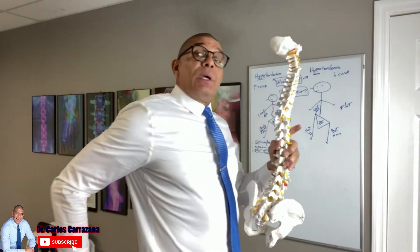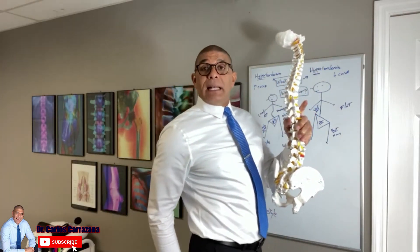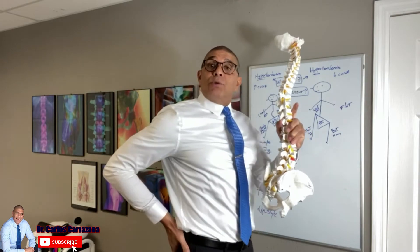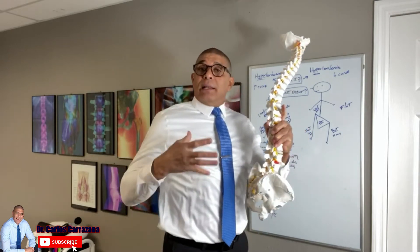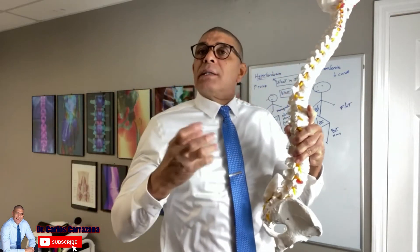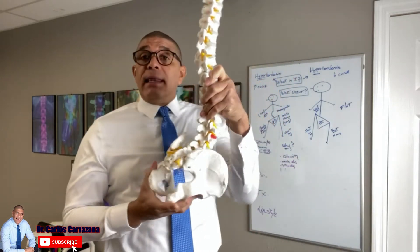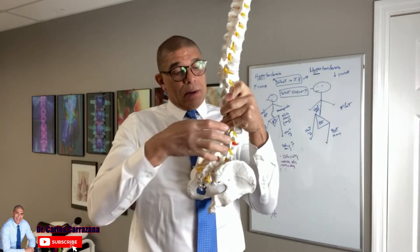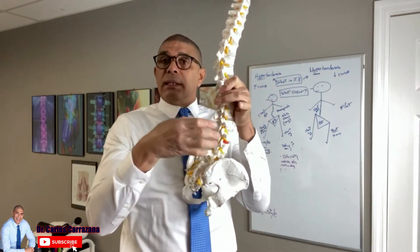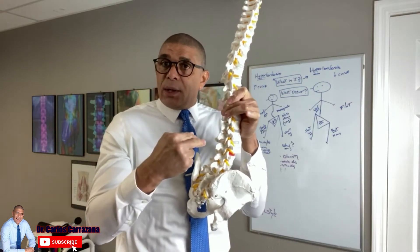The same situation applies to the glutes and hamstrings. The muscles posterior to the legs and the gluteal muscles are going to be more long, more stretched out, and more soft. Different from the lumbar muscles — the lumbar muscles are going to be tight.